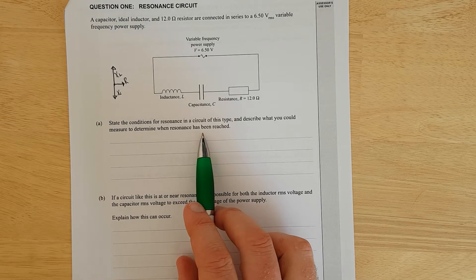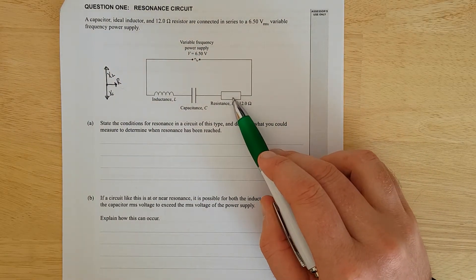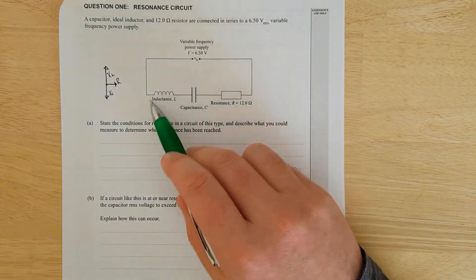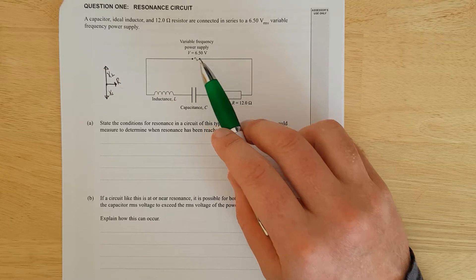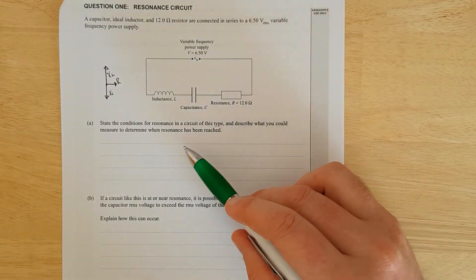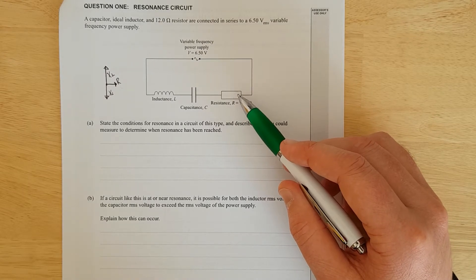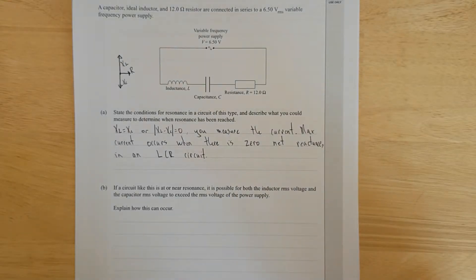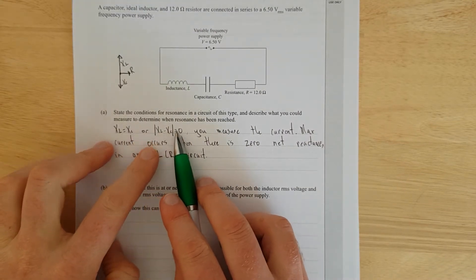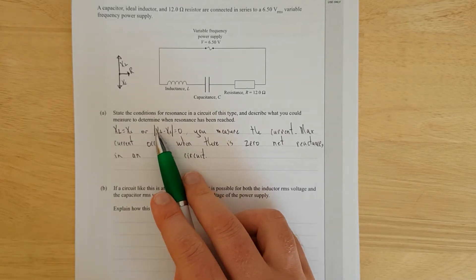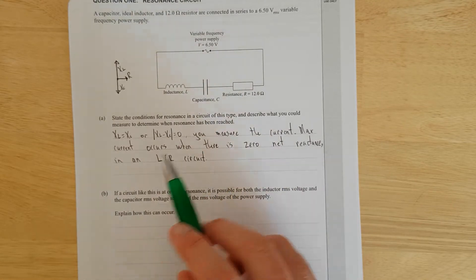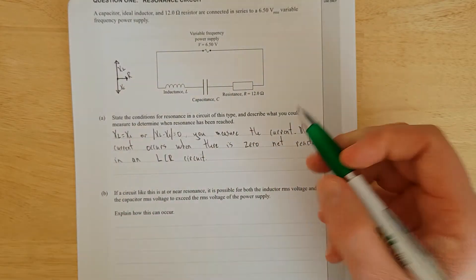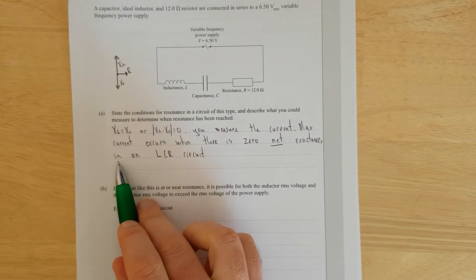What could you measure to determine when resonance has been reached? You could measure maximum voltage across the resistor, because that's when resonance is reached. You can essentially treat the inductor and capacitor as having no reactance to the supply. So current will be at maximum - this is the easiest thing to measure. You can also measure for max voltage across any of the components, but normally you'd measure max voltage across the resistance. I've written XL equals XC, or XL minus XC equals zero. Max current occurs when there is zero net reactance - keyword: net reactance in an LCR circuit.